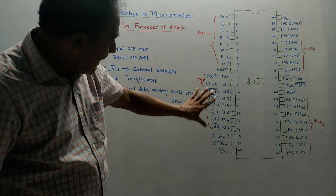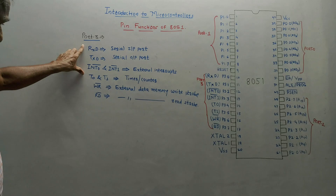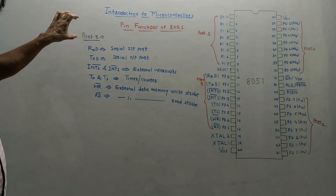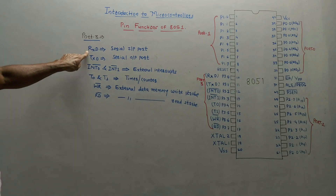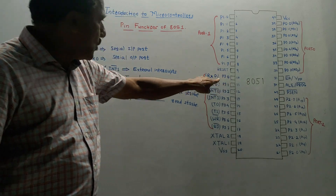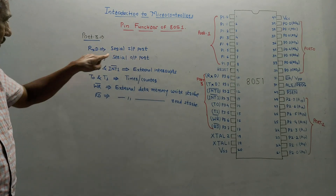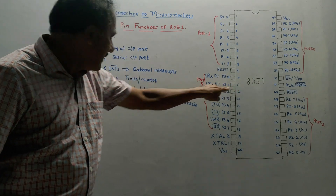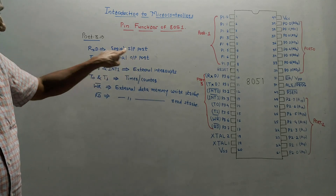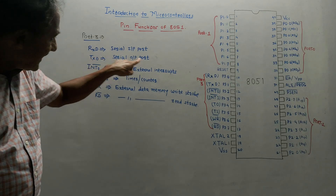Port 3 has some extra functions. Apart from the basic explanation, there are different functions performed by the pins of port 3. RXD corresponds to P3.0, pin number 10 — it is the serial input port. TXD corresponds to pin number 11 — it is the serial output port.